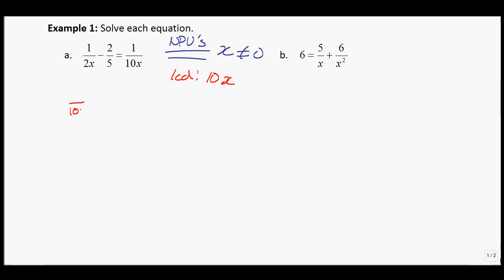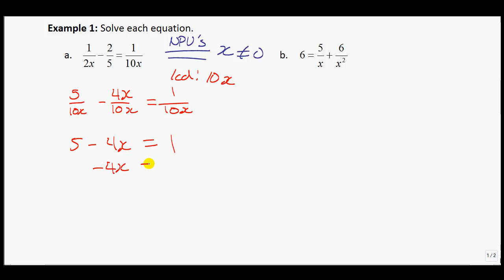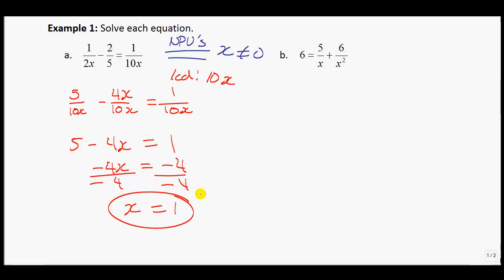Writing everything over 10x: the 1/10x term is already good to go. For the 2x denominator, multiply by 5 to get 10x, so the numerator becomes 5. For the 5 denominator, multiply by 2x to get 10x, giving a numerator of 4x. Cancel out the denominators. Moving the 5 to the other side gives negative 4x equals negative 4. Dividing by negative 4, we get x equals 1. Checking against the restriction x ≠ 0 — it passes, so we're good.